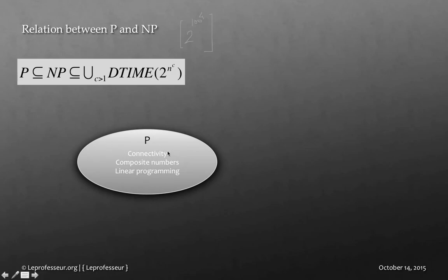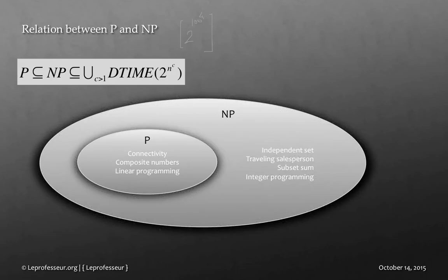Scientists have proved that connectivity, composite numbers, and linear programming essentially fall under the P category and have found efficient algorithms to solve these problems. However, there are still problems where we don't know whether they fall under P — such as the independent set, traveling salesperson, subset sum, and integer programming problems, and whether P equals NP remains open.